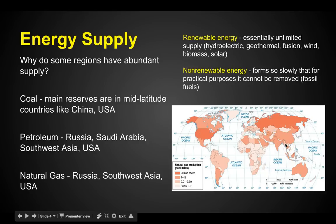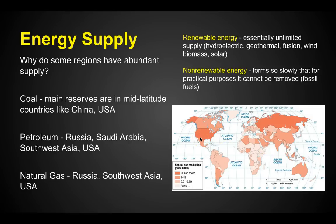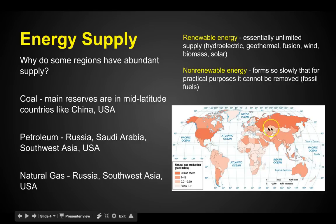For petroleum: Russia, Saudi Arabia, Southwest Asia, and the United States. We've got a lot of coal, a lot of petroleum, and natural gas, and as far as development and energy needed to run our economy and businesses, we've got the resources. Same with Russia, same with China. That's why these big three are so huge right now.